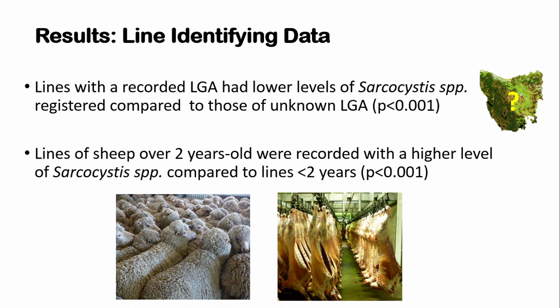The data also came with identification codes corresponding to particular districts in Tasmania. Interestingly, those batches recorded as unknown or coming through a different jurisdiction had much higher levels of sarcocystis compared to those with a known district area. Perhaps not unsurprisingly, given that sarcocystis macroscopic cysts take some time to develop, sheep over 2 years old show a higher level of sarcocystis compared to younger sheep.